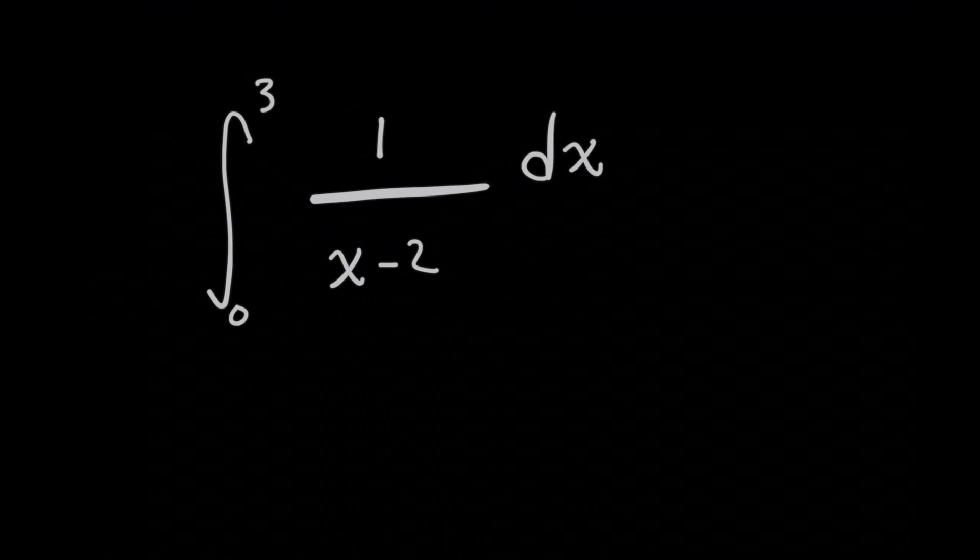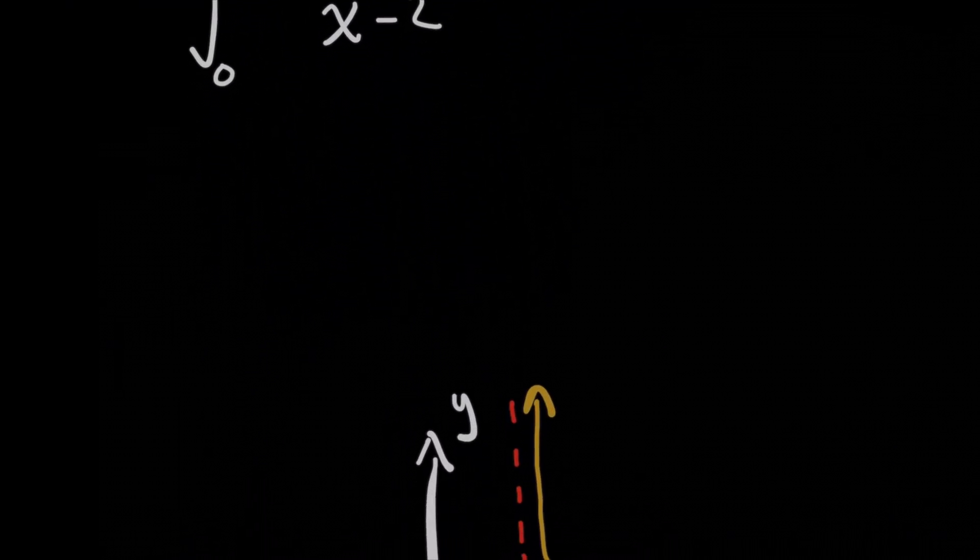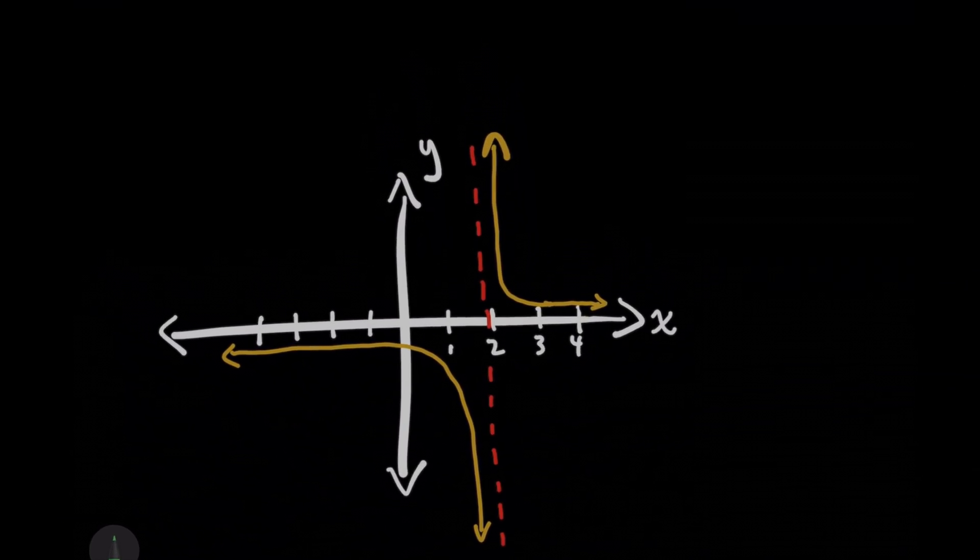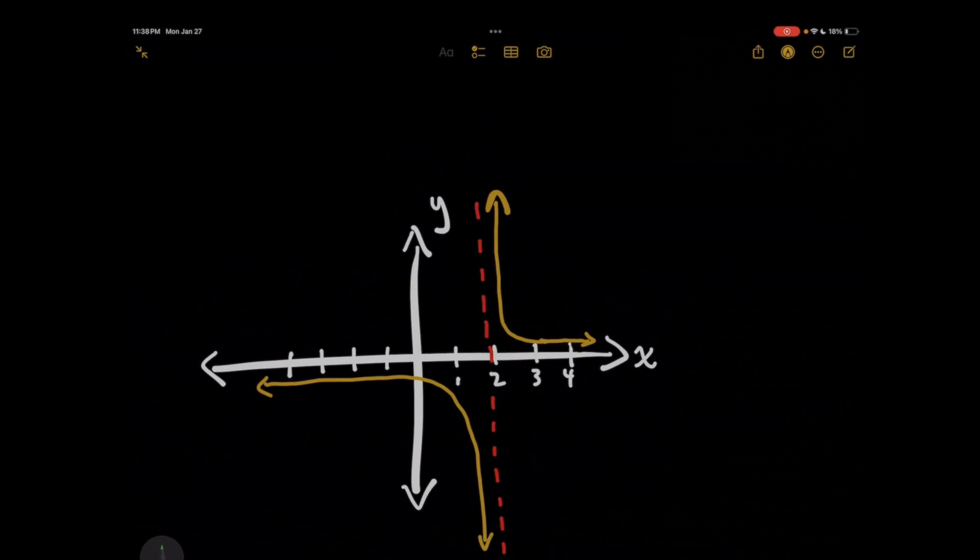For this asymptotic function, or hyperbolic function, I'm going to go ahead and graph it to show you what I mean. Remember for 1 over x, it looks something like this, but in this case, since we have 1 over x minus 2, everything is shifted two units to the right.